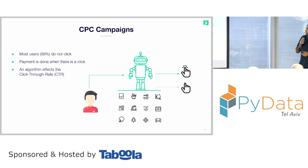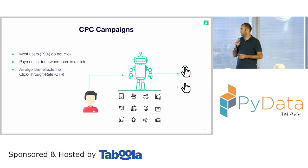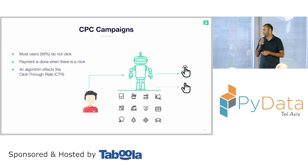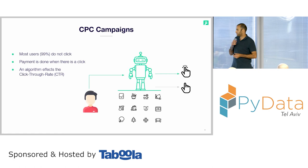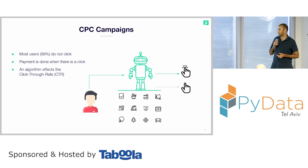CPC stands for cost per click. Most users — I believe most of you as well — do not click on an ad when they see it, and payment is done only when there is a click. Most of the algorithms in this space are about CTR optimization, click-through rate, as some of you may know.